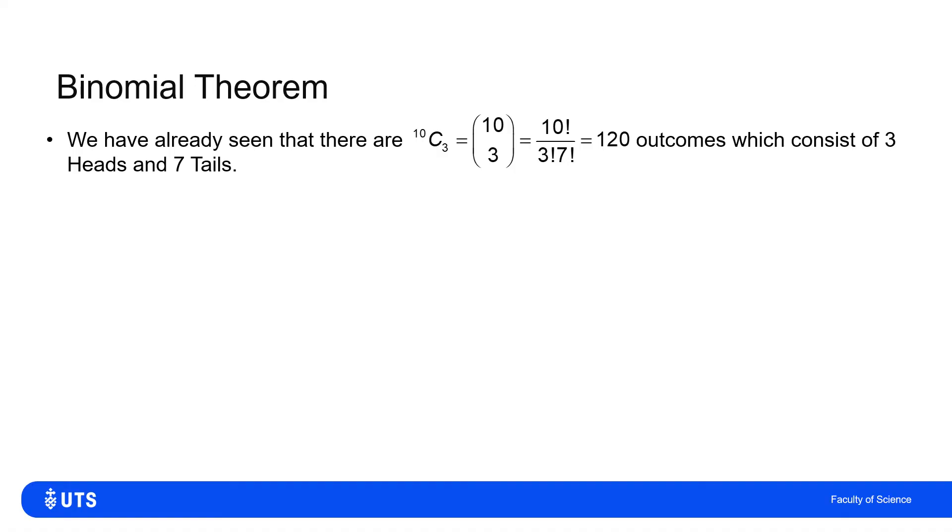divided by three factorial times seven factorial. Again, noting that the two numbers within the factorial, three and seven, add up to the other number in the factorial, 10. So 10 factorial divided by three factorial, seven factorial means there's 120 ways that I could get three heads and seven tails in a string of 10 ordered outcomes. So the chance of getting exactly three heads in 10 flips is 10 choose three or 120 times p cubed times one minus p to the power seven.